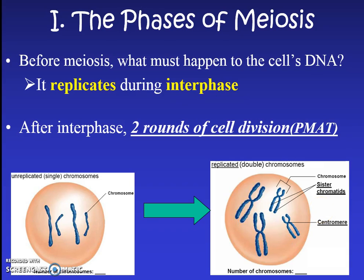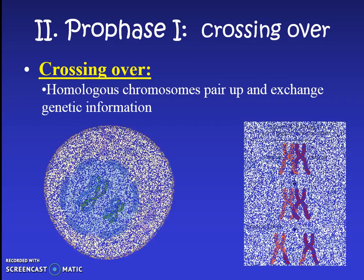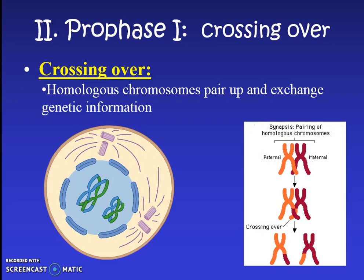Before we jump into looking at all the phases at once, we're going to zoom into the first part of PMAT, which is prophase I - that's the first time prophase occurs since prophase is going to occur twice. There's going to be a really specific special thing that happens in this first round of prophase: homologous chromosomes are going to pair up and they're going to exchange genetic information.